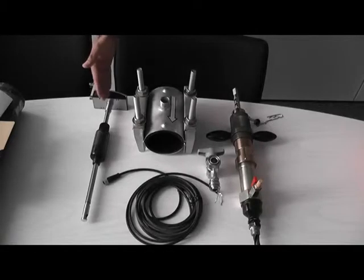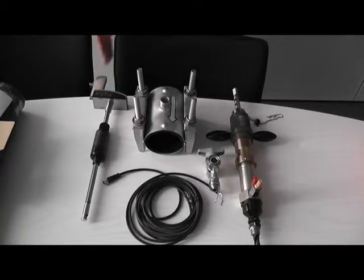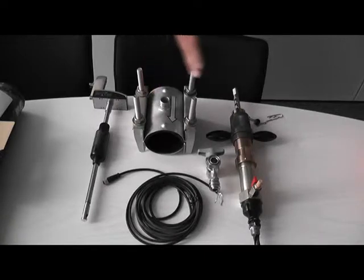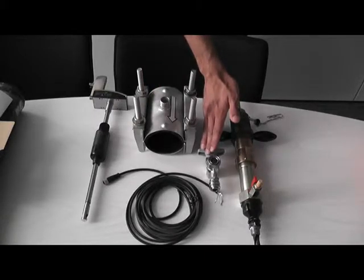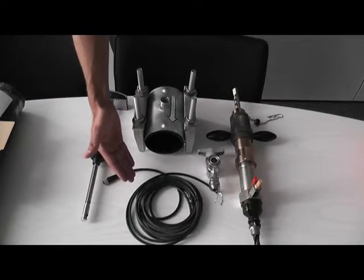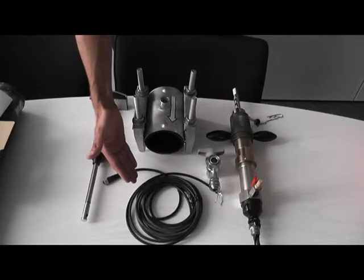Before we install the 6448 under pressure, we need to make some preparations. First we need the Testo 6448 transmitter, the tapping clamp in the right diameter, the ball valve, a special driller to drill the hole under pressure, and the connection cable to get the power supply and send measurement values.